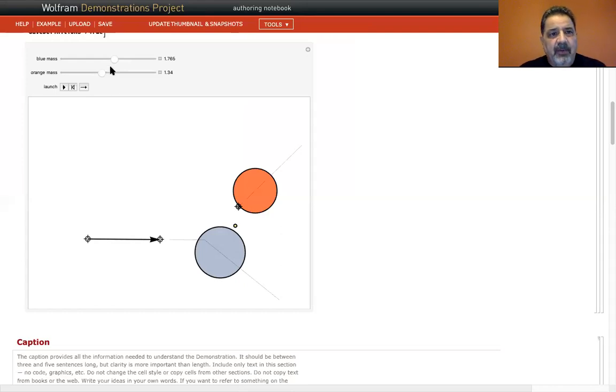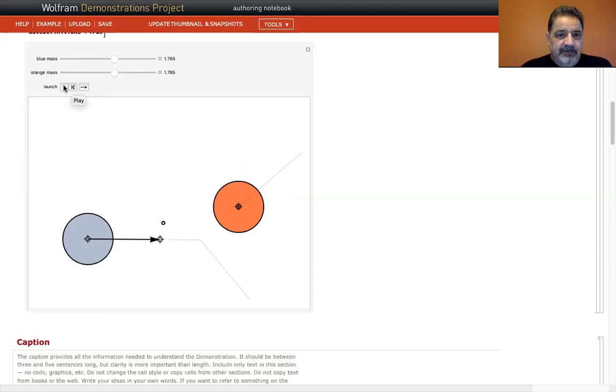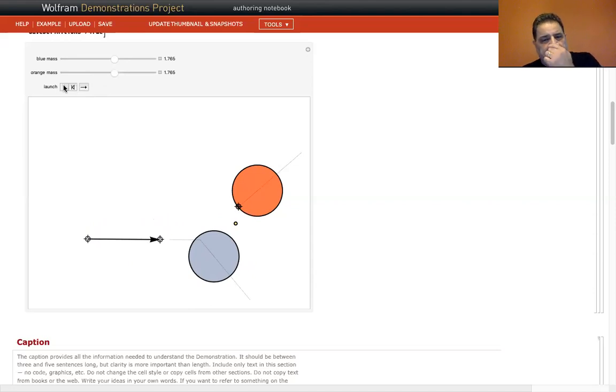Let's put them at about the same mass, 1.765 each. Let's reset it and run it. You can see what happens when they're not in line with each other. They glance off each other and go at different angles.